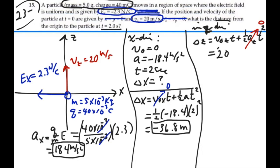So it's simply velocity, 20 meters per second, times time, 2 seconds, which equals 40 meters.